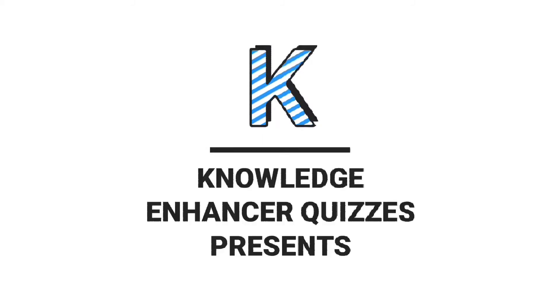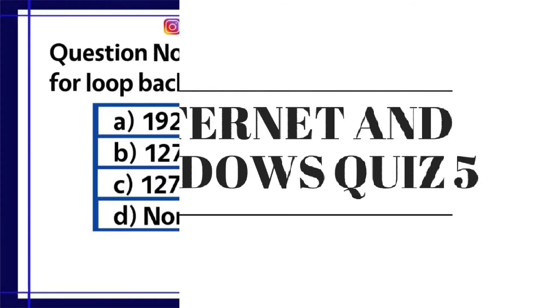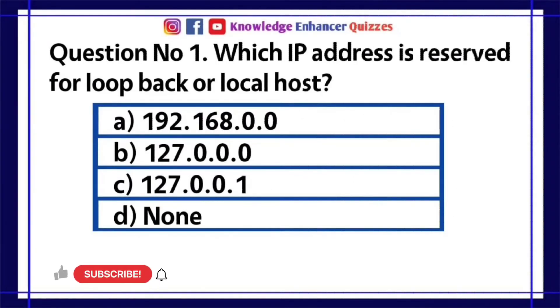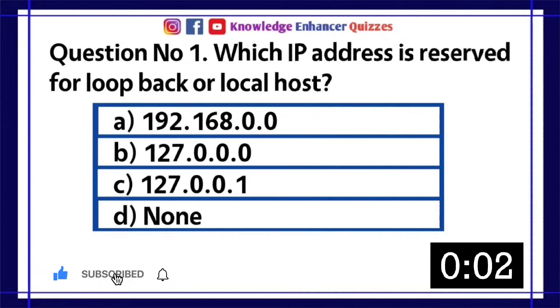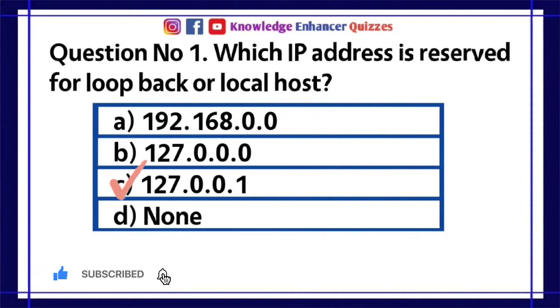Knowledge Enhancer Quizzes presents Internet and Windows Quiz 5. Question number 1: Which IP address is reserved for loopback or localhost? A. 192.168.0.0, B. 127.0.0.0, C. 127.0.0.1, D. None. Option C is the right answer.